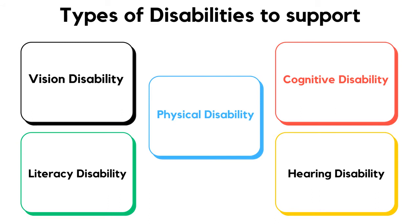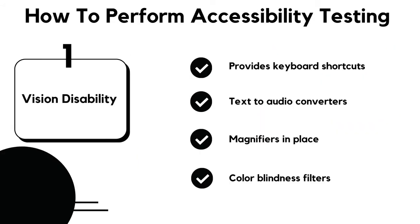Types of disabilities to support: First, vision disability — complete blindness, color blindness, or poor eyesight. Second, physical disability — difficulty using keyboards and mouse. Third, cognitive disability — poor memory or difficulties with learning. Fourth, literacy disability — difficulty finding words and reading. Fifth, hearing disability — auditory problems like deafness and hearing impairments, difficulty to hear or hear clearly.